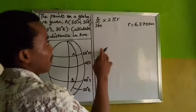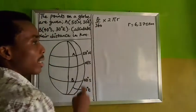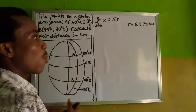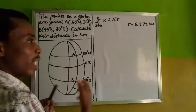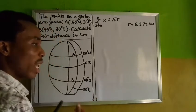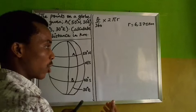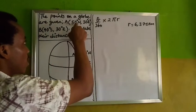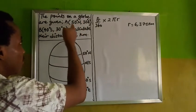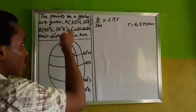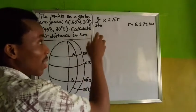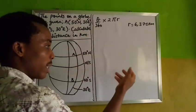Now, how do we get theta? Theta can be derived by either adding or subtracting the latitudes. When do we subtract and when do we add? If your latitudes are in the same direction, you subtract. But if your latitudes are in different directions, you add. Looking at my latitudes — 50 degrees north and 40 degrees south — they are different directions, so I am going to add them to get theta.